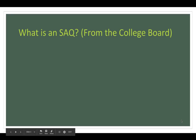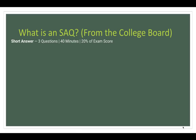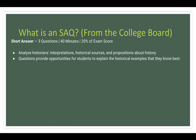From the College Board — what is an SAQ? On the exam, there'll be three questions. You'll have 40 minutes to answer those three questions and it's 20% of your exam score. You'll analyze historians' interpretations, historical sources, and propositions about history. Questions provide opportunities for students to explain the historical examples they know best. Some questions will just be a question; others will include texts, images, graphs, or maps.